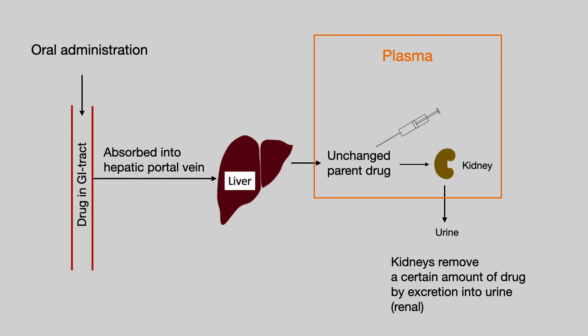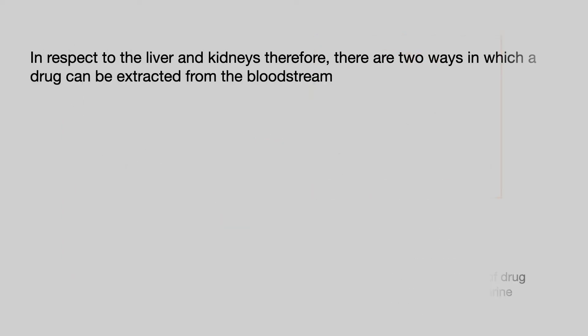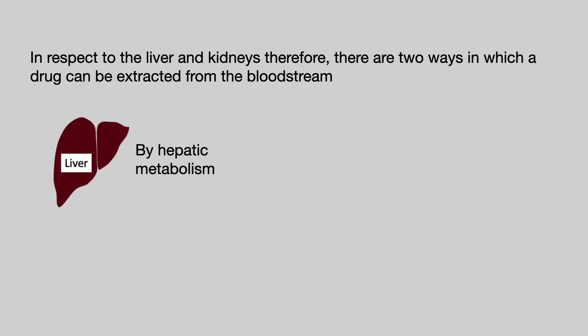To summarise, in respect to the liver and kidneys, there are two ways in which a drug can be extracted from the bloodstream: either by hepatic metabolism or by renal excretion.